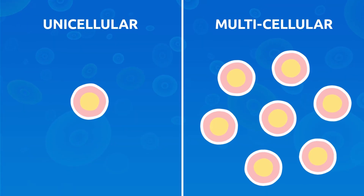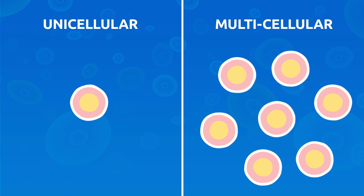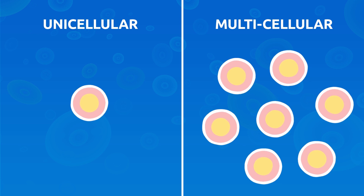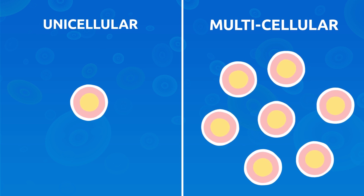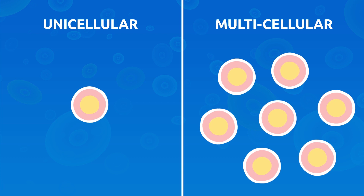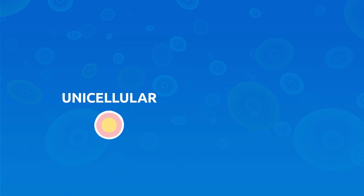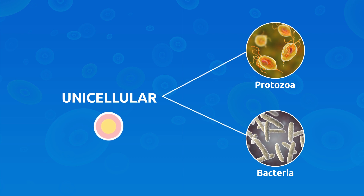There are unicellular and multicellular organisms depending on the number of cells they are made up of. Unicellular organisms are very small and they consist of one cell only. Bacteria are unicellular organisms.